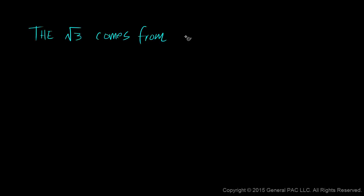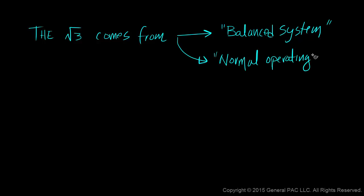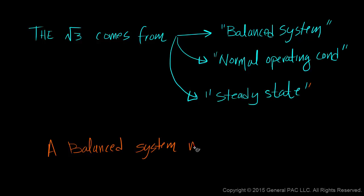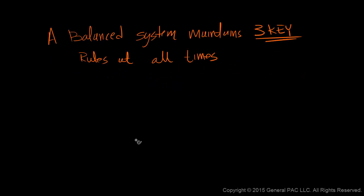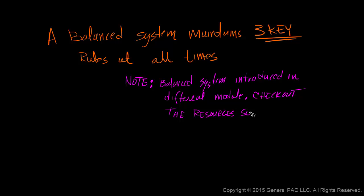The root three comes from the fact that we have a balanced system that is typically running in normal operation or in steady state. All three terms pretty much mean the same thing. A balanced system is a system which maintains three key rules at all times. These rules are specifically for current and voltage quantities. Note, the balanced system is methodically introduced in a different module. Be sure to check out the resources section for additional information.